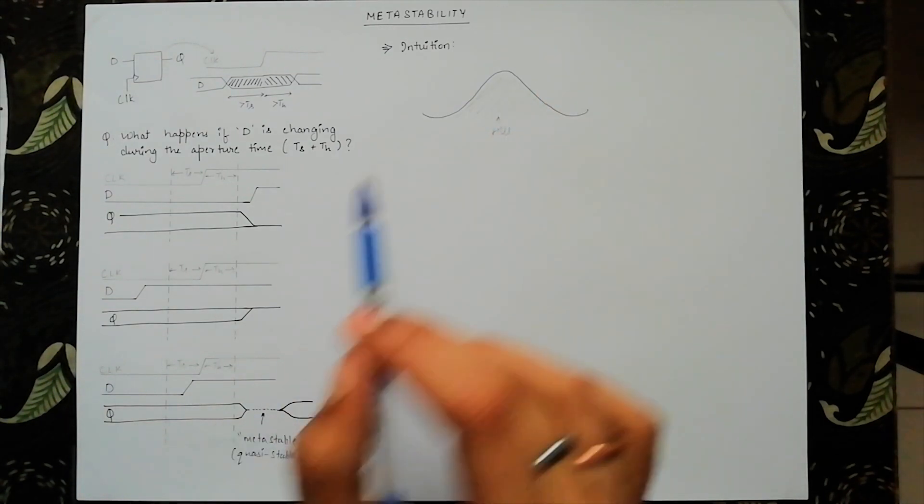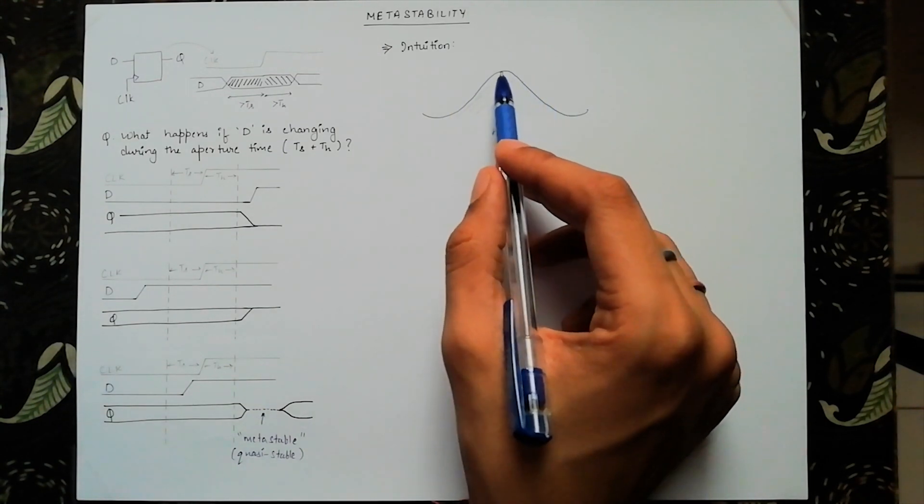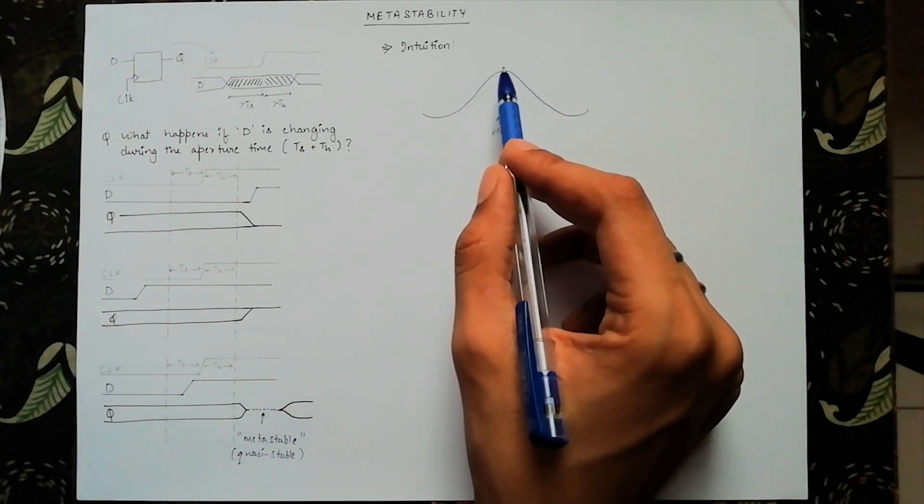The valley around the hill can be related to the two stable states of a flip-flop, a high and a low state. Then the top of the hill becomes the metastable state.